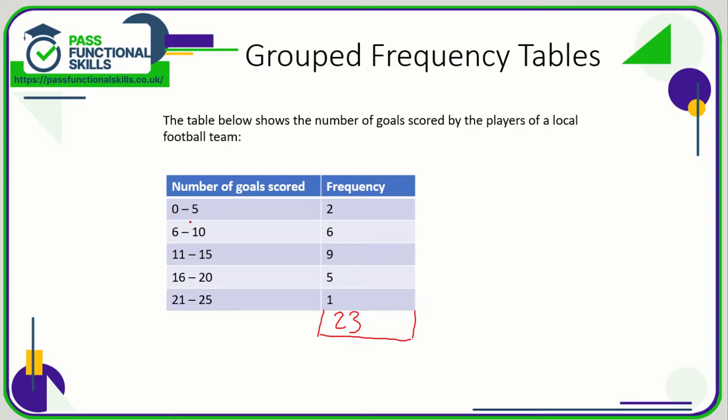Notice also that it's impossible for a player to be in more than one category. They do not overlap at all. So here we are dealing with grouped data.